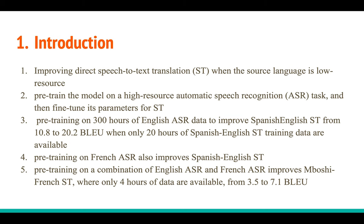They also show that the pre-training task does not need to match the source or target language of your translation task. For example, if you are doing Spanish-to-English translation, you can pre-train using French speech recognition and then fine-tune for Spanish-to-English translation and still get performance improvement. What actually happens is the model learns to capture channel variability, speaker variability, and acoustic variability — lower-level features that transfer across languages.